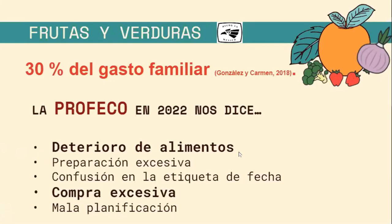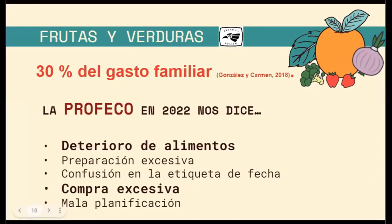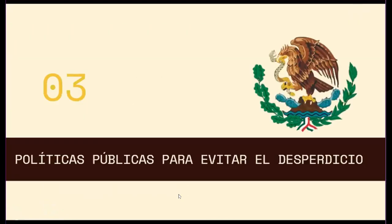¿Por qué? Por actividad microbiana, por deterioro por medio de la respiración, en este caso de las frutas y verduras. La otra es que hacemos preparaciones excesivas de los alimentos; a veces somos una familia de cuatro personas, pero nosotros preparamos para diez personas, y esos alimentos, si no se comen, se desperdician. También hay una confusión en la etiqueta de la fecha; no sabemos identificar las fechas de consumo y por lo tanto perdemos alimentos por no fijarnos en la fecha de caducidad. También hay una compra excesiva de alimentos y la mala planificación.